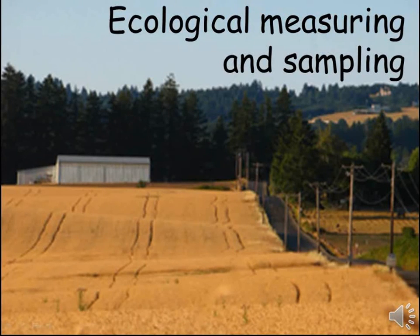Scientists who study how living things interact and how they are distributed are called ecologists. This video looks at some of the ways ecologists can measure things, looking at environmental factors such as temperature, light intensity and pH that can all affect the distribution of organisms, and also ways of collecting and sampling organisms directly.